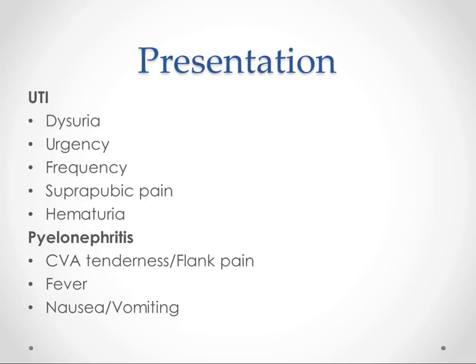The presentation is just like we always talk about: it hurts to pee, you've got to go pee a lot, suprapubic pain, sometimes blood in the urine. And if it's going to be pyelonephritis or something above the bladder, then you might get some CVA tenderness and/or flank pain. But a lot of these people just look really sick — they've got a fever, they're nauseous, they just look ill and feel bad.